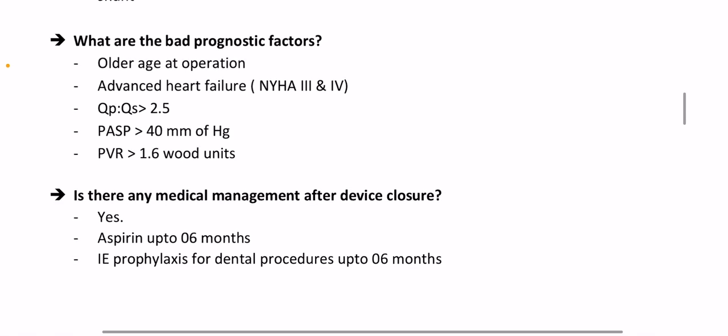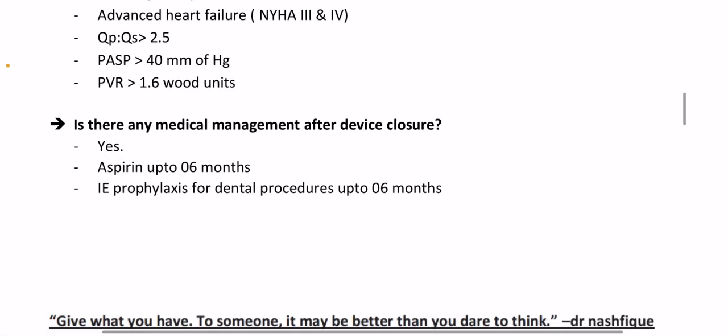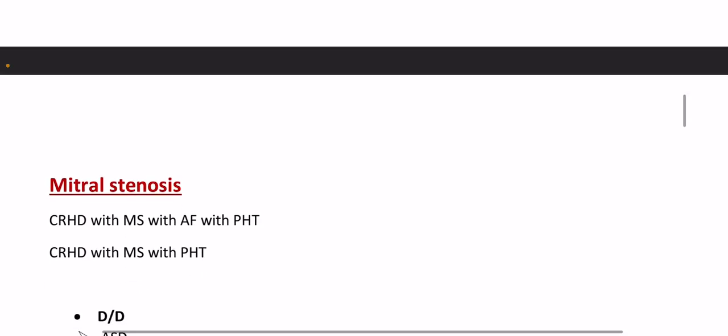What are the bad prognostic factors? Older age at operation; advanced heart failure (NYHA class 3 and 4); Qp/Qs ratio more than 2.5:1; pulmonary artery systolic pressure more than 40 mmHg; PVR more than 1.6 Wood units. Is there any medical management after device closure? Yes — aspirin for up to six months; infective endocarditis prophylaxis for dental procedures for up to six months.